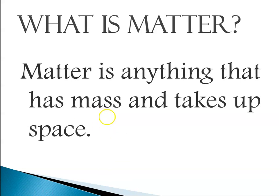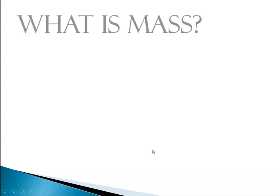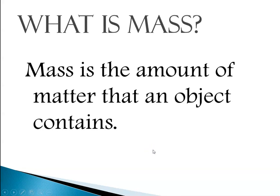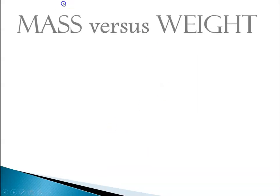Matter is anything that has mass and takes up space. So what is mass? Mass is the amount of matter than an object contains, the amount of stuff in an object. If you think about it, if I asked you which one has more mass, a beach ball or a bowling ball, most people would conclude that a beach ball has less mass and a bowling ball has more mass.